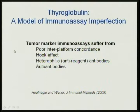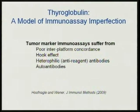This is just the model of immunoassay imperfection. There are a number of problems which Mark Wenner and I recently published in a review in the Journal of Immunological Methods — the title is 'The Fundamental Flaws of Immunoassays.' Let me talk about these four ways that immunoassays — and I'm going to focus on tumor marker immunoassays — really suffer. The first is poor interplatform concordance: the idea that if we measure the assay on one system and then go across town and measure on another system, we'll get two different answers for the same specimen. Something called the hook effect, heterophilic or anti-reagent antibodies, and autoantibodies as well.